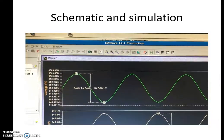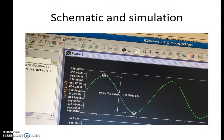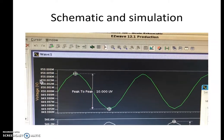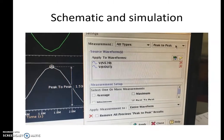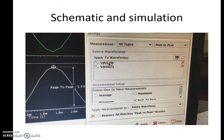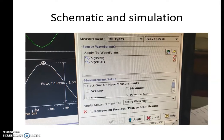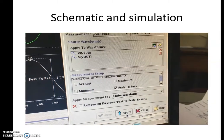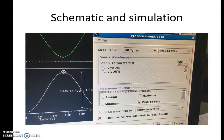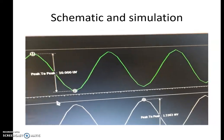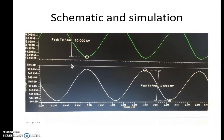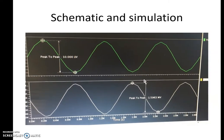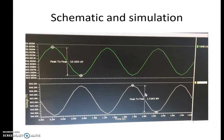After simulation, the circuit waveform is obtained. Go to Tools > Measurement Tool. Since we want peak-to-peak voltages, select peak-to-peak and apply. The peak-to-peak voltages will be displayed: the input peak-to-peak is 10 microvolts and the output peak-to-peak voltage is 1.59 millivolts.